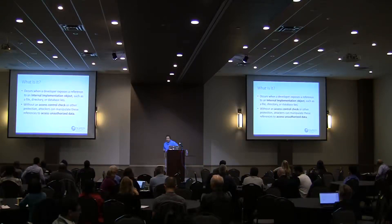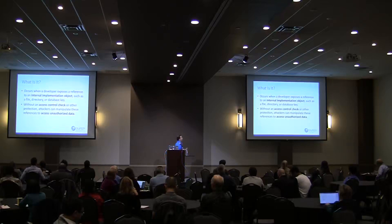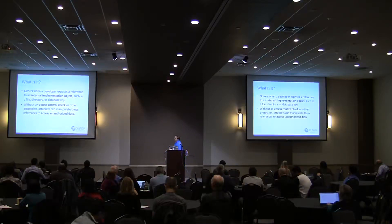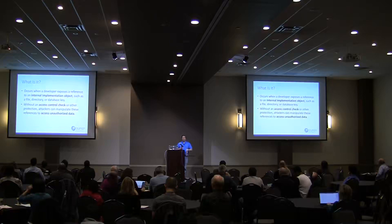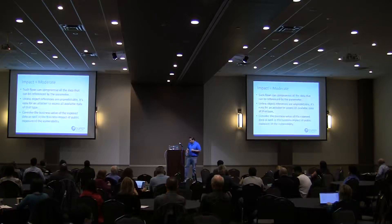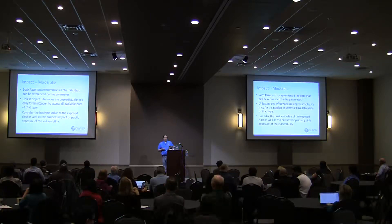Insecure direct object references occur when a developer exposes a reference to an internal implementation object — like a file, a directory, or a database — and they don't perform an access control check or any other sort of protection. As a result of that, attackers can manipulate those references to access other bits of data. The impact here is going to be moderate because these flaws can compromise all the data that can be referenced by the parameter.